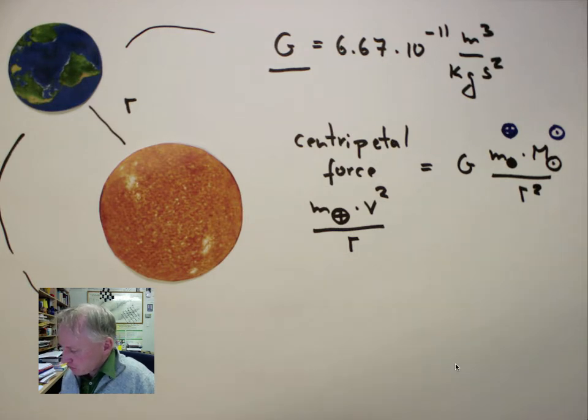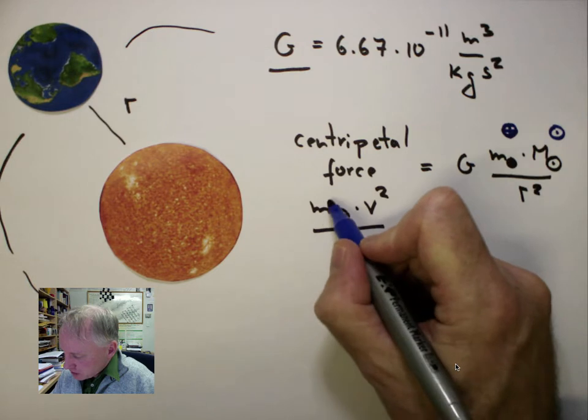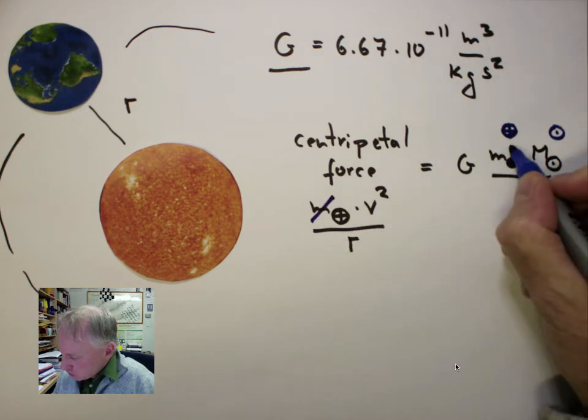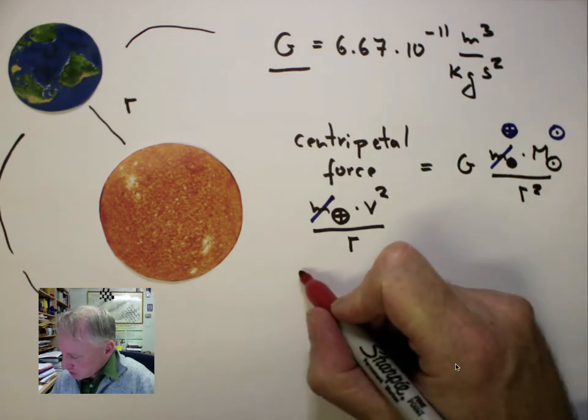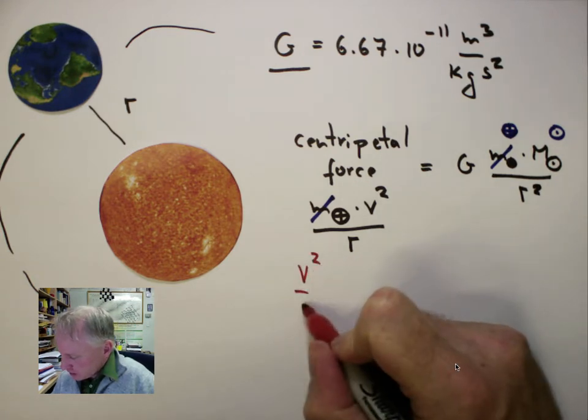Now, we see that we have the Earth mass on both sides, so we can take out the Earth mass, and we obtain a simplified equation, which is V squared over r.